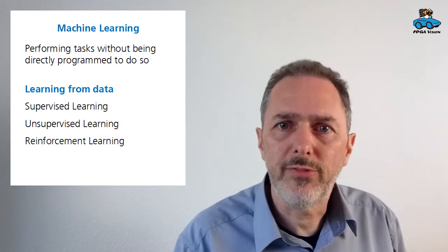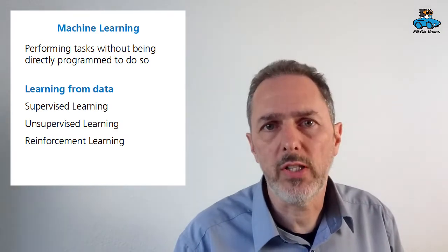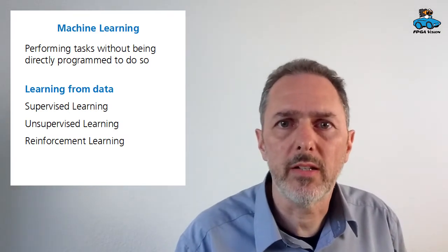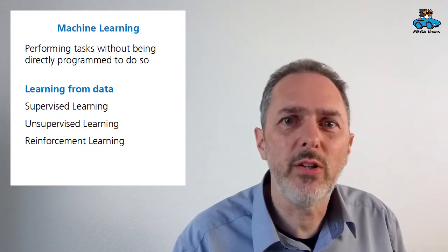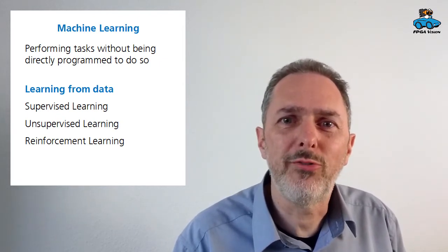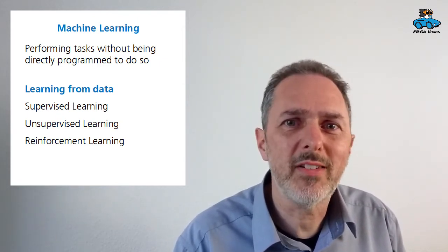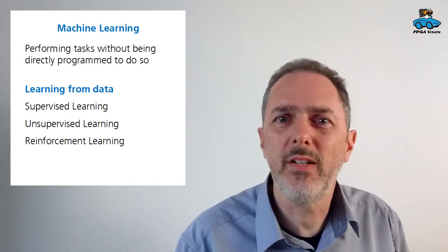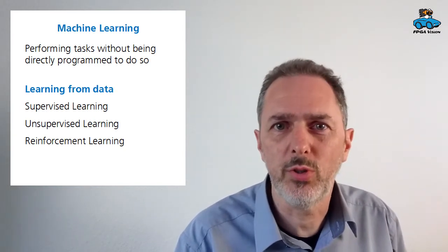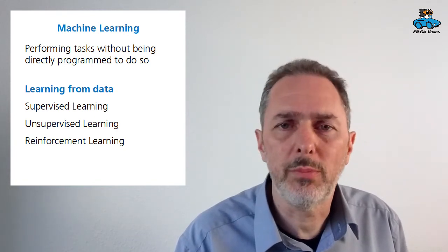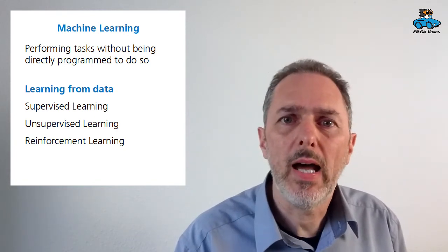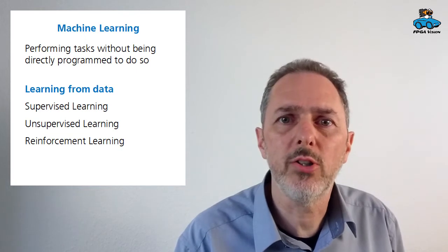For this lecture, we want to first give a definition of machine learning. The best definition I have heard is that machine learning means performing a task without explicitly programming a computer or a system to do so. The system learns from data how to behave and how to make decisions.